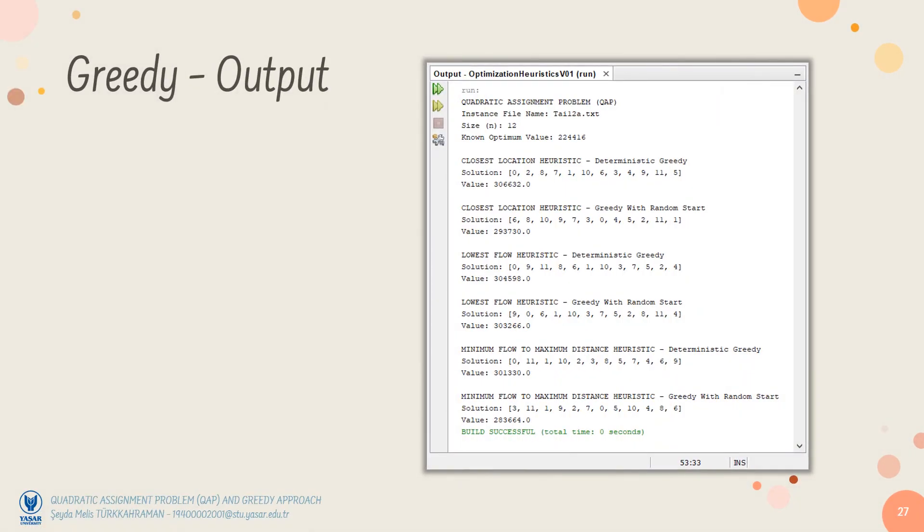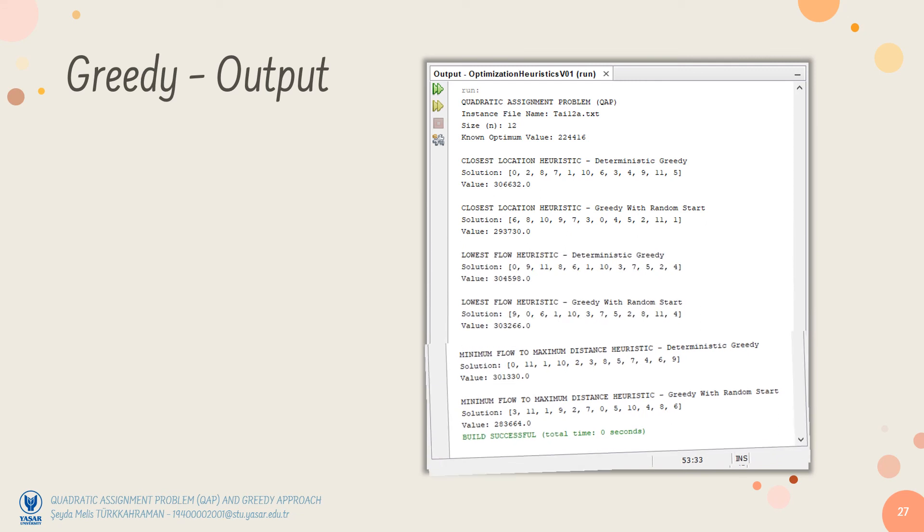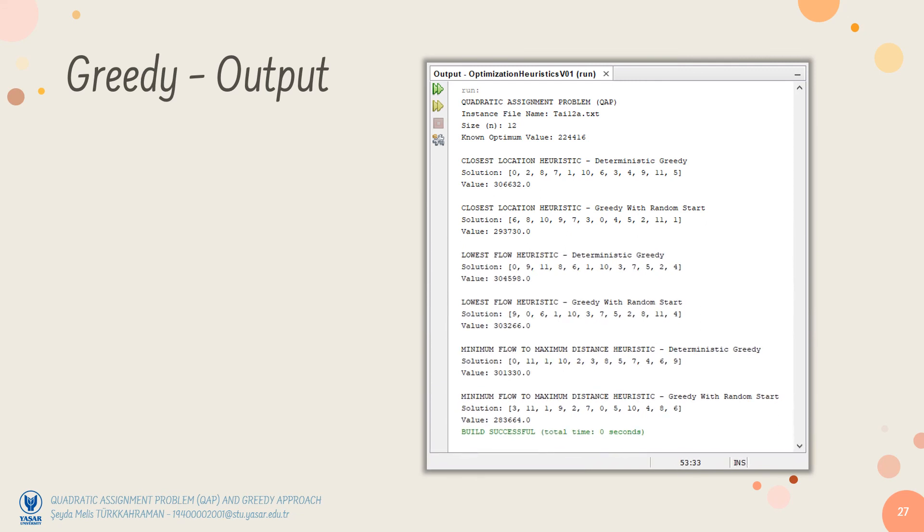Before ending my presentation, I would like to share the current output screen for the QAP instance with the size of 12. In the beginning, problem summary is printed. Then, the solutions obtained through each heuristic with and without random start are listed. Random start greedy heuristics, especially the third heuristic, is able to produce better solutions in case of minimal cost.